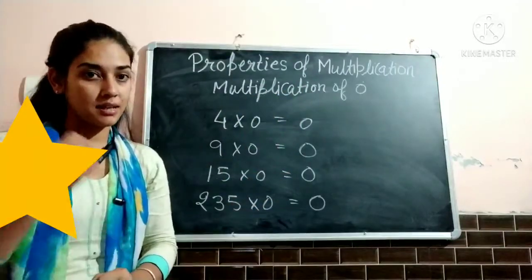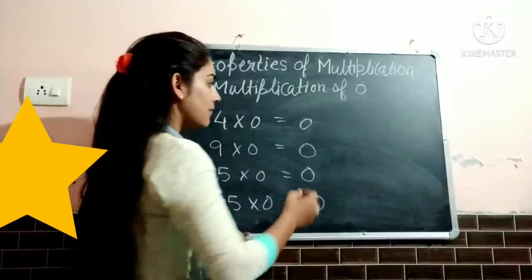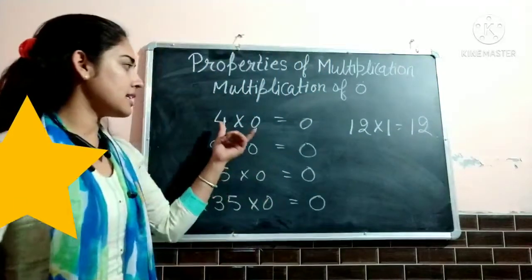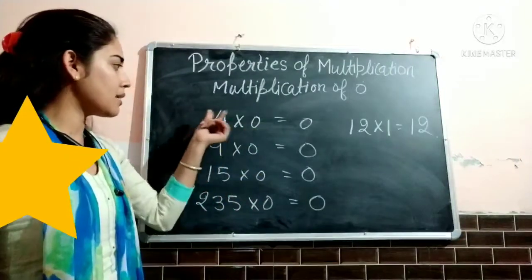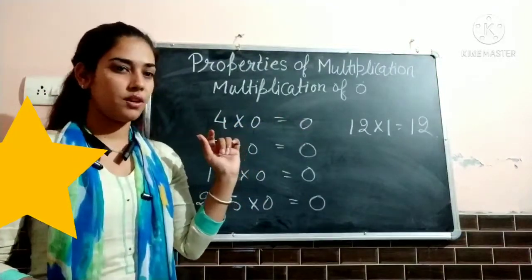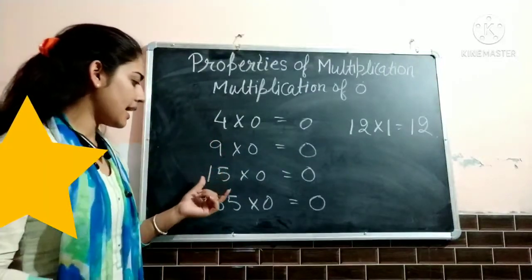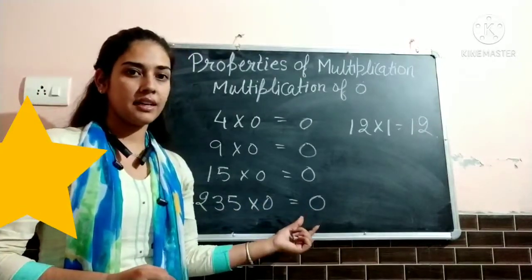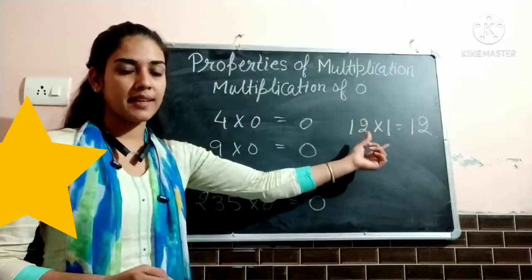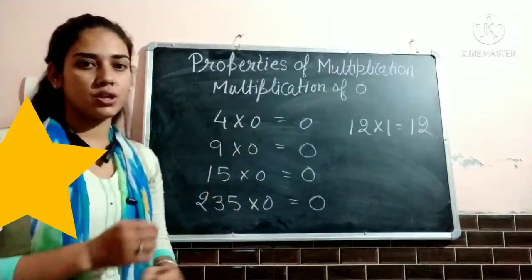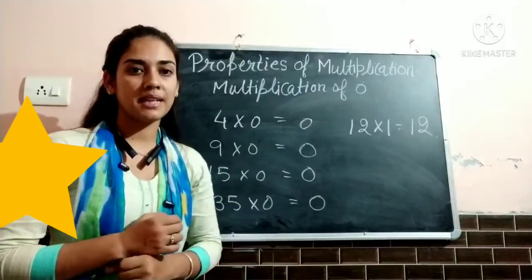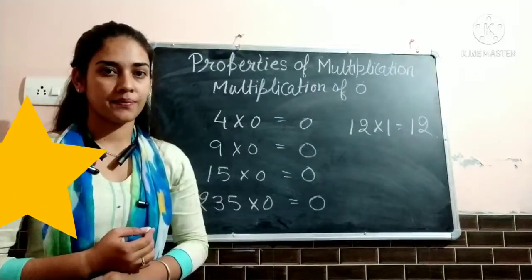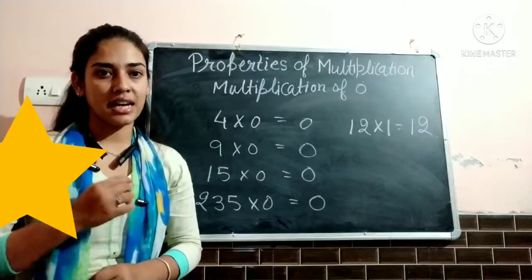Multiplication of 1 we have discussed — if we will multiply any number by 1, the answer is that number itself. And in the case of 0, if we will multiply any number by 0, the answer will be 0. In previous two properties, if we changed the order in multiplication, the answer remains same. So these are the properties of multiplication. Let us do some questions.